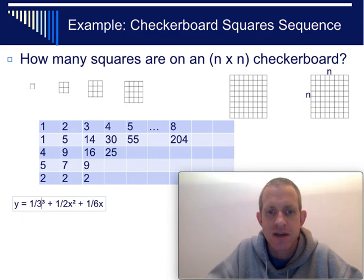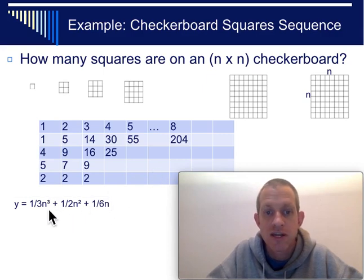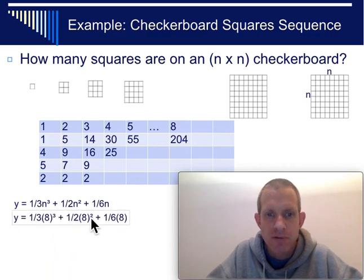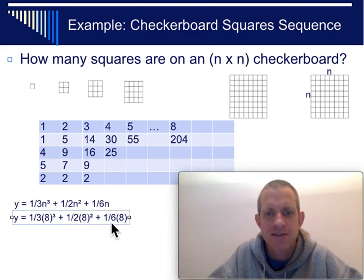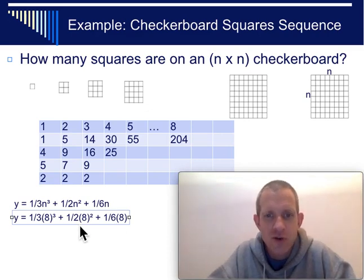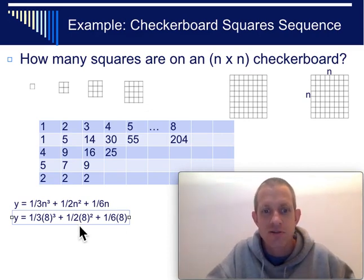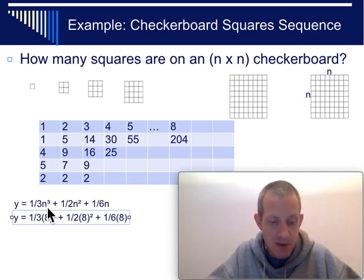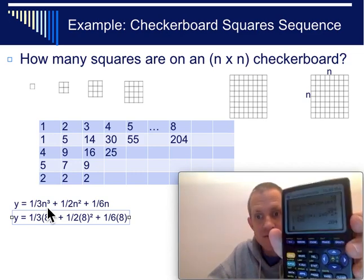I should probably call these n's, not x's. And, if we wanted to check this a moment, we could plug in an 8. And, this formula better give us a 204. It's pretty remarkable, when you look at it, that a third, 8 cubed, isn't going to divide by 3 nicely. 8 squared will divide by half nicely. But, 8 doesn't divide by 1 sixth or into sixths nicely. And, yet, this formula always gives out an integer, when you put in an integer. It does, in fact, give us 204.